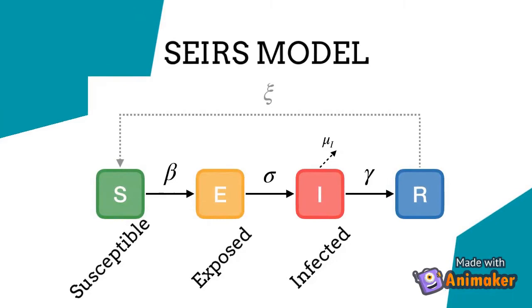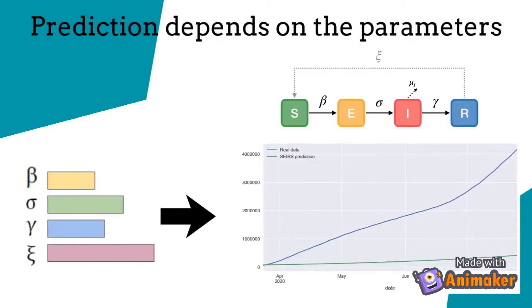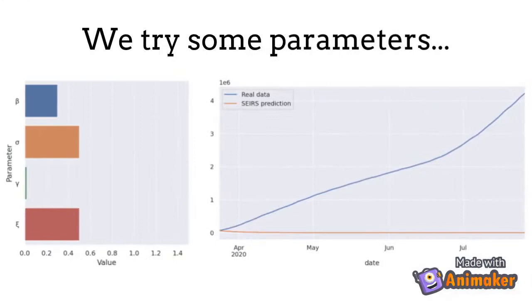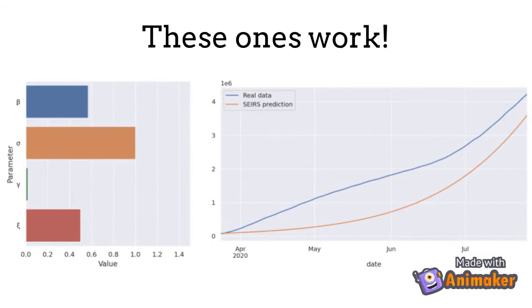However, this model depends on a set of parameters and its resulting prediction changes based on them. So, we want to find a set of parameters that better fits the current curve of positive cases, expecting that the model will generalize to the following dates that we want to predict.